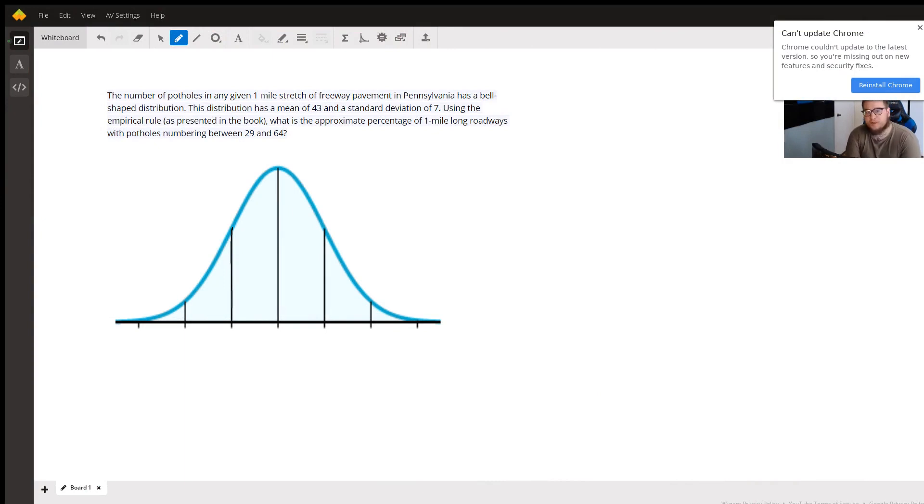We know that the distribution has a mean of 43 and a standard deviation of 7. We also know that this distribution is bell-shaped or normal, and we are to use the empirical rule to approximate the percentage of one mile long roads that have potholes numbering between 29 and 64.